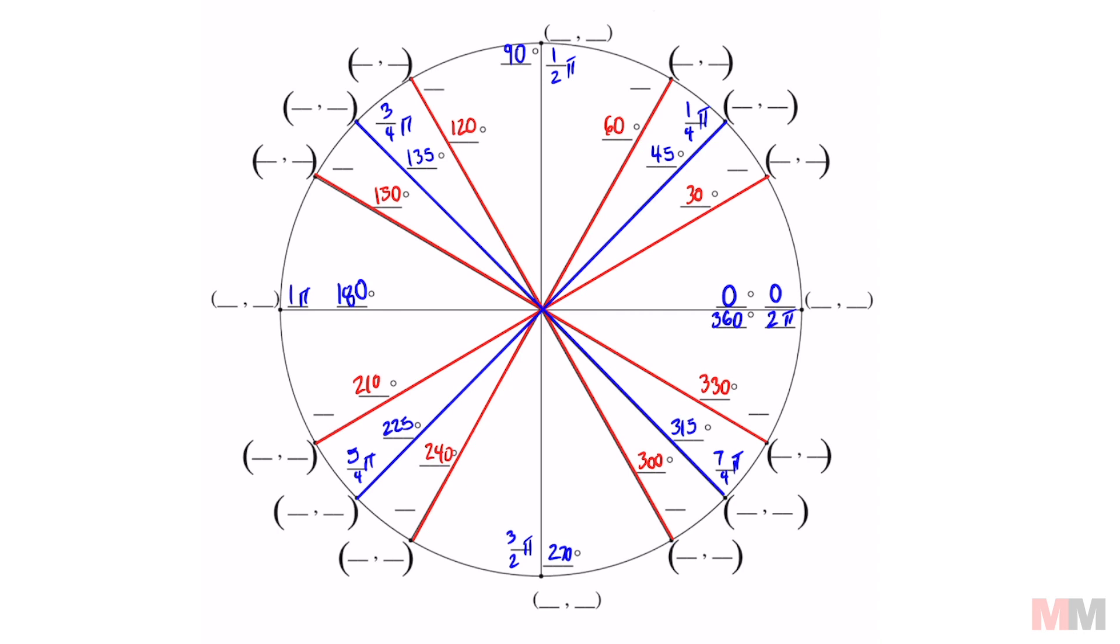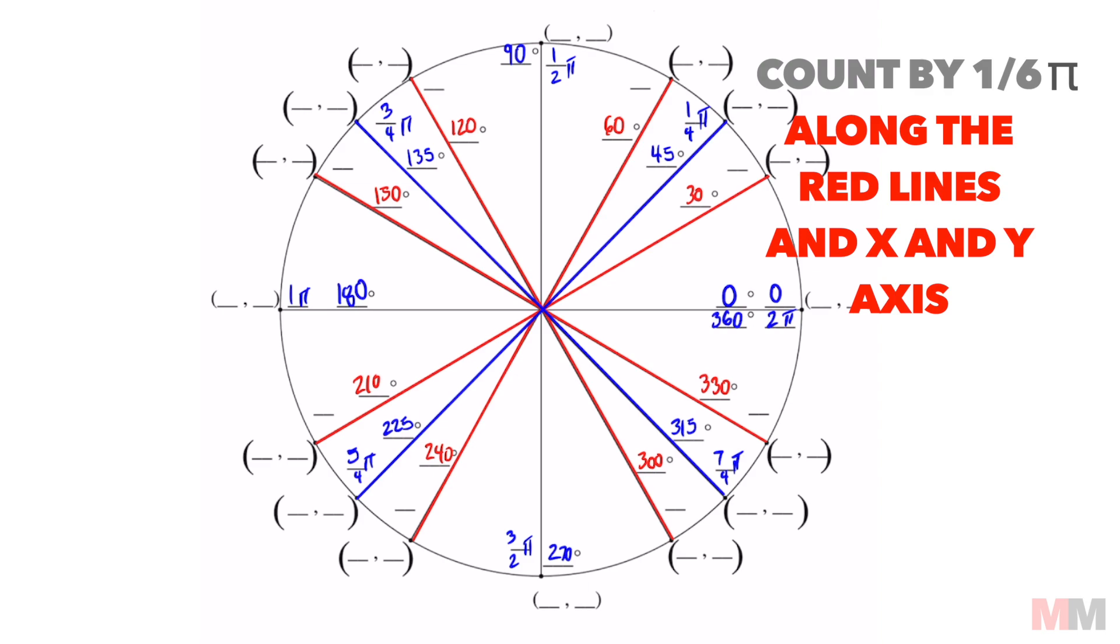The red lines doing the same thing but in radian mode. If you look at this, this is a half pi right? This is one-third of one-half. And one-third of a half is the same as one-sixth. So we just have to count by one-sixth.